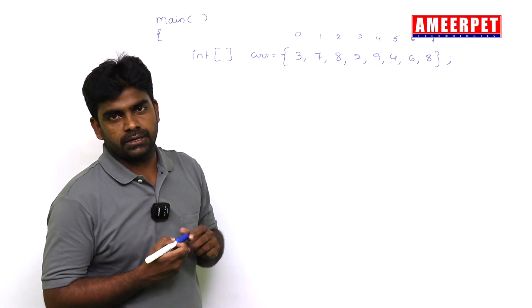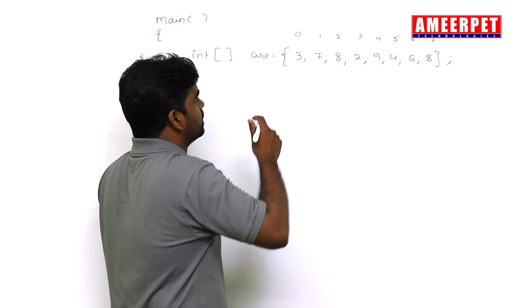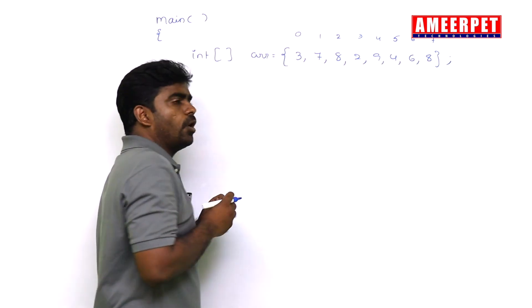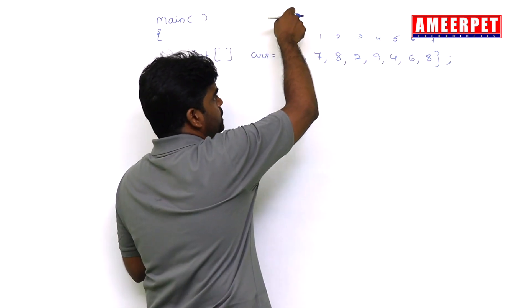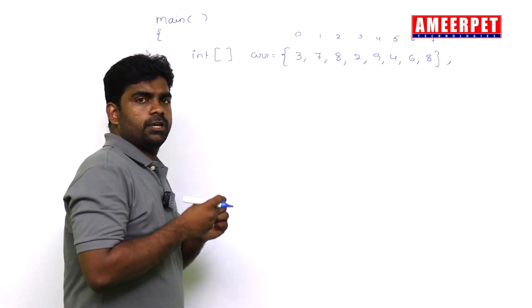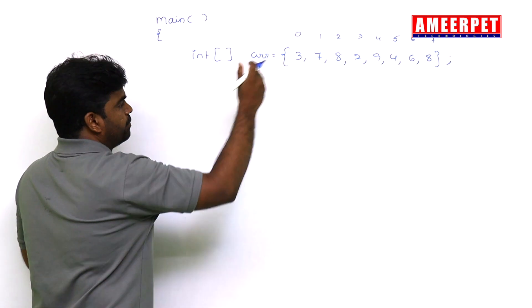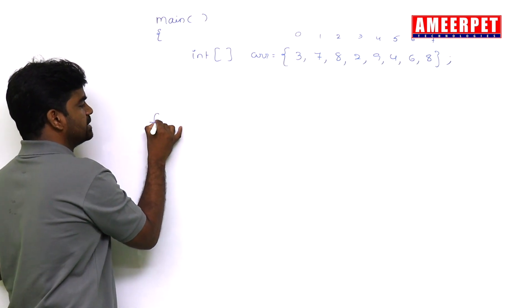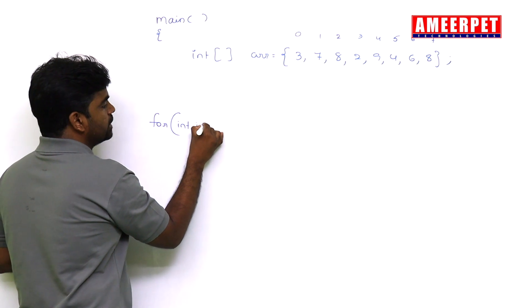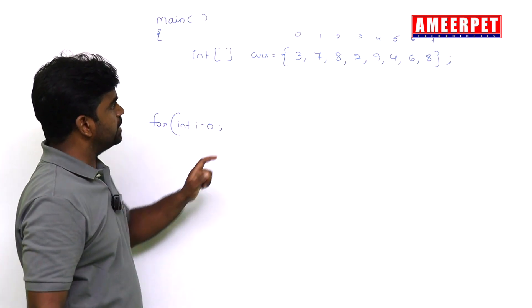Generally, if you want to display in the usual order, you start with zero and end with length minus one. If you want to find the length—suppose forward, we already discussed—once again I'm writing: for int i equals to zero, index starting with zero.